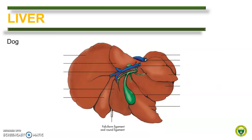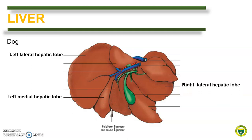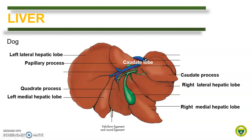Further, the lobes are divided into sublobes and processes. Let us take a look at the liver of the dog, as it has the complete lobation and sublobations. The left hepatic lobe is divided into left lateral and left medial lobes. The same is true on the right side: the right hepatic lobe is divided into right lateral and right medial hepatic lobes. The caudate lobe is further subdivided into the papillary process and the caudate process. The quadrate lobe remained undivided as shown here. This is the complete general pattern of liver lobation, which is present in both dogs and cats.